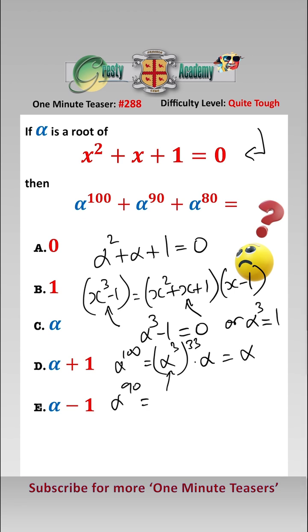Alpha to the 90 is equal to alpha cubed to the 30 which equals 1. And alpha to the 80 is equal to alpha cubed to the power of 26 times alpha squared which equals alpha squared.